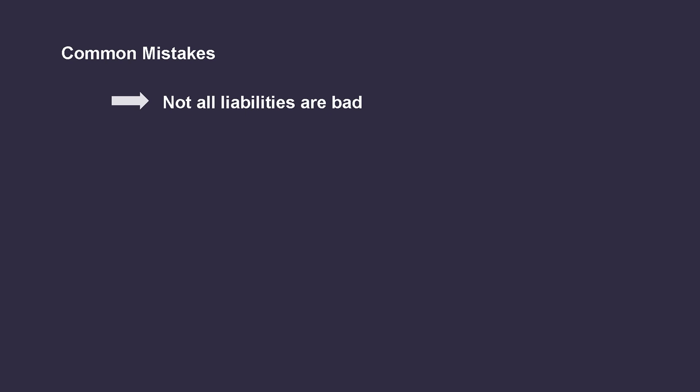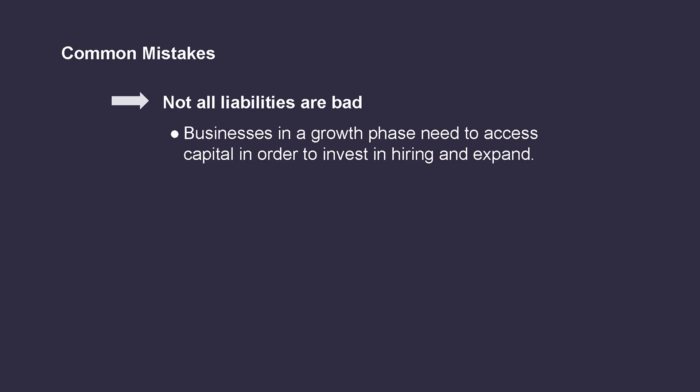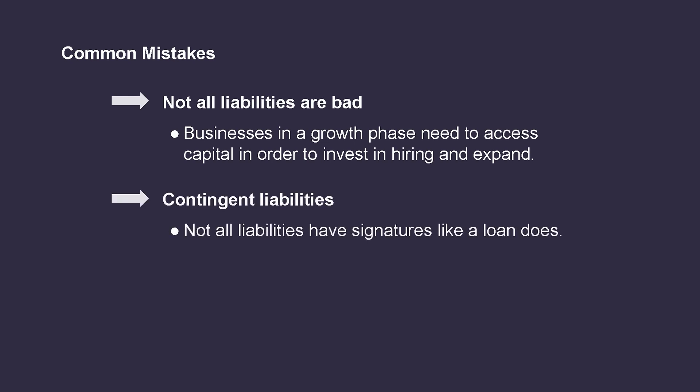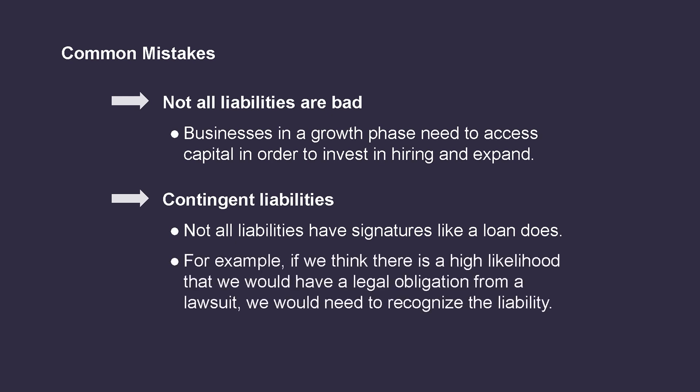Some people hold the belief that all liabilities and debts are a bad thing. However, this is not necessarily the case, especially when it comes to companies that are in the growth phase and are looking to access capital in order to make investments that will allow them to hire more people and expand the business. Where it does become challenging is when companies take on too many liabilities and don't have the ability to pay them back when they come due. Not all liabilities come with a signature and a contract, like the bank loan example. Sometimes we have liabilities arise, such as potential lawsuits, where the future obligation is not at 100% certainty. In these types of situations, we still have to apply the criteria based on what we know today. We take a look to see if it appears that there is a high likelihood that there will be a legal obligation in the future, then the liability would still need to be recognized.